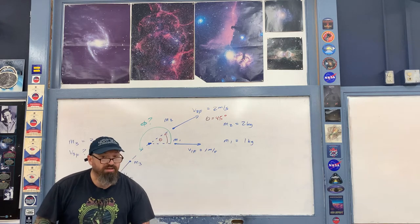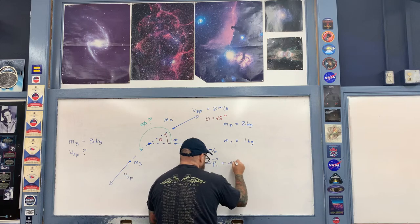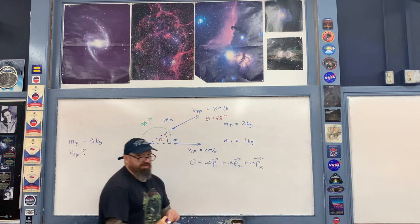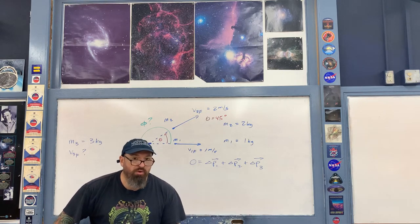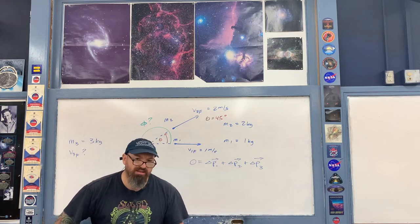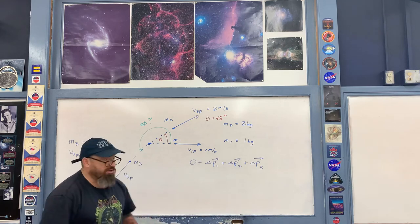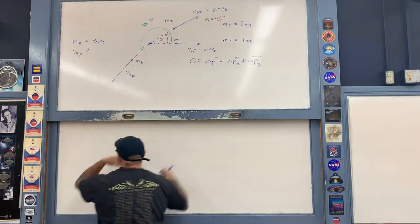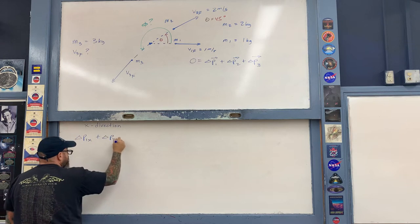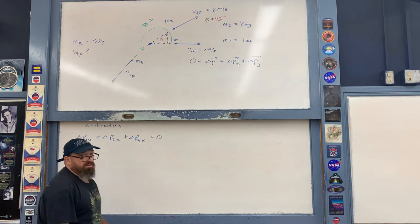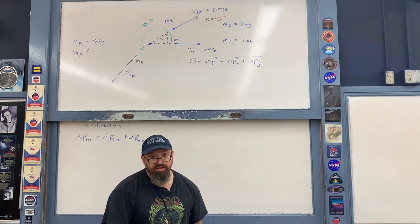We set up our conservation of momentum equation in two dimensions with three pieces: zero equals delta_p1 plus delta_p2 plus delta_p3. Rather than using i-hat and j-hat notation all at once, we break it into x and y directions separately. For the x-direction: delta_p1_x plus delta_p2_x plus delta_p3_x equals zero. We look at final minus initial momentum for each object in the x-direction.